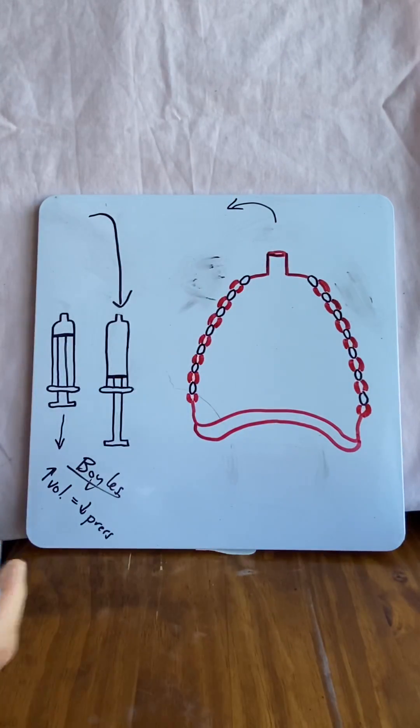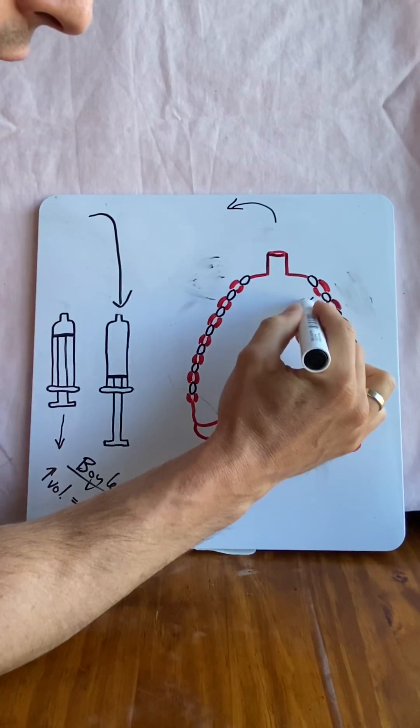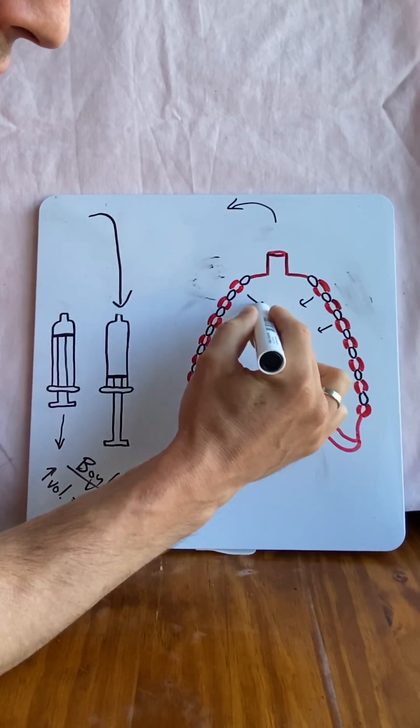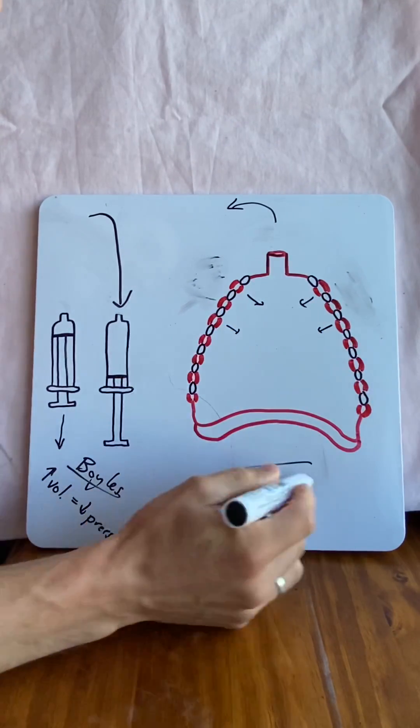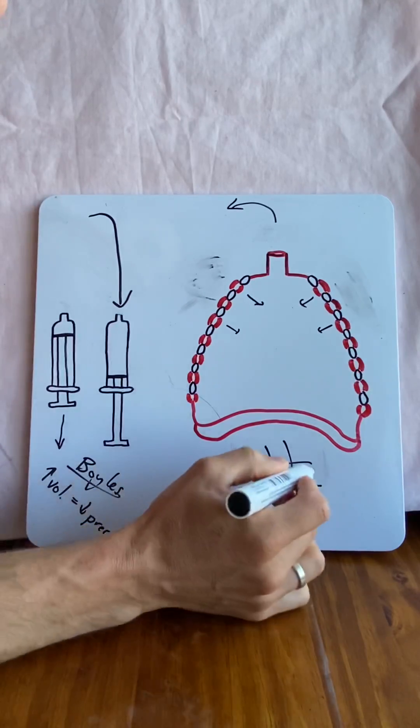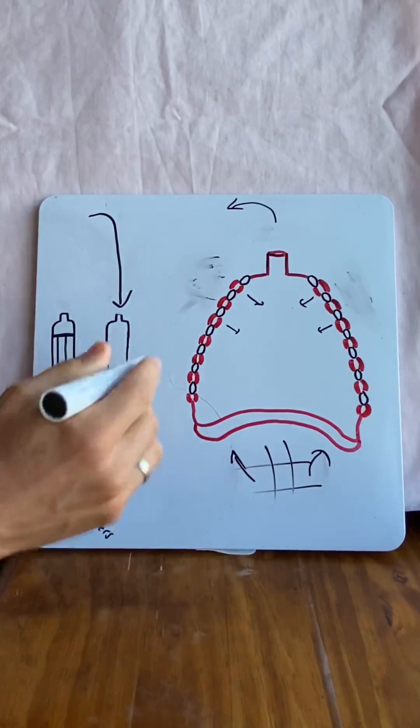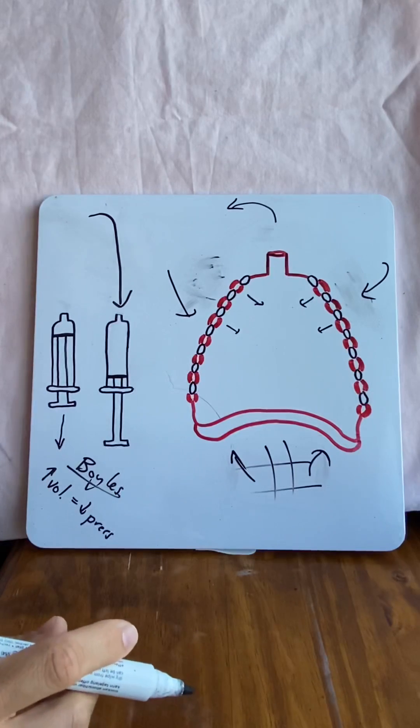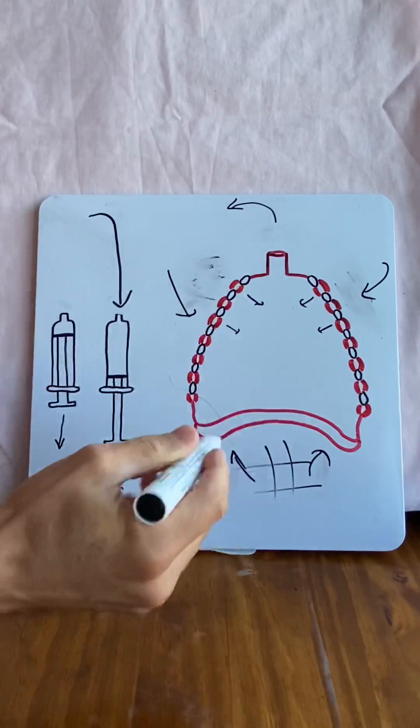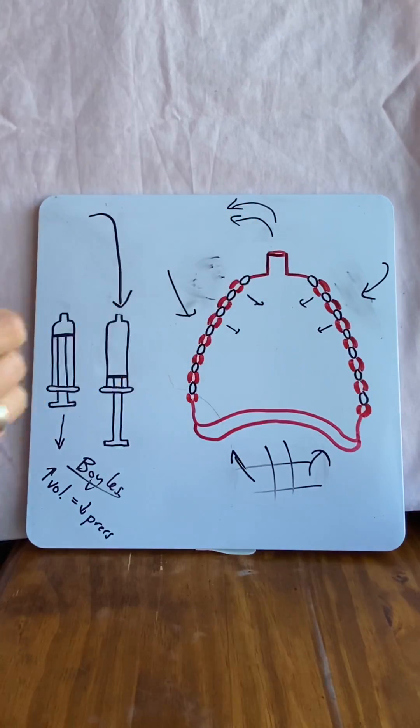But if we want to forcefully exhale, we can contract the internal intercostals, we can contract the abdominal muscles, which are going to be down here, and we can contract the lats. And again, this decreases the volume, increasing the pressure and even more air rushes out. And this is the mechanics of breathing.